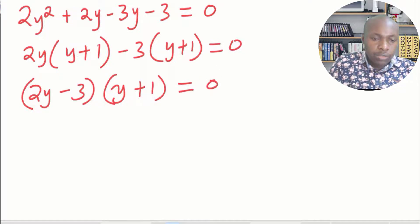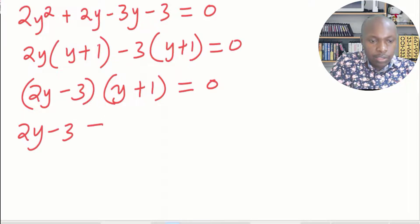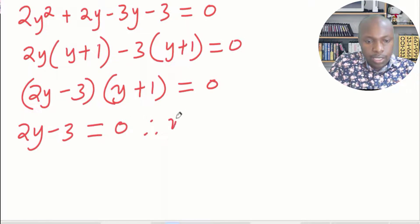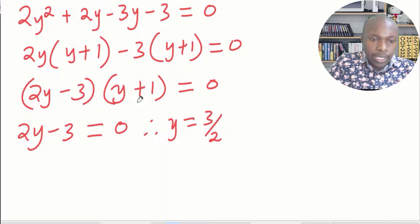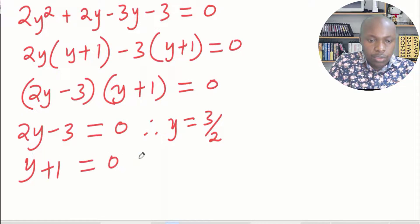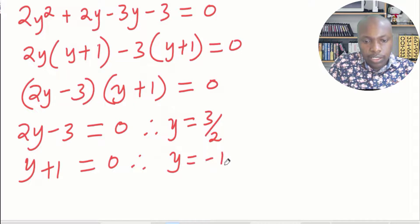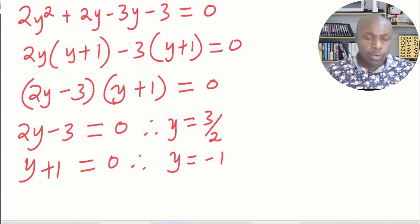So we have two solutions. Either 2y minus 3 equals 0, which gives y equals 3 over 2, or y plus 1 equals 0, which gives y equals negative 1. So now we have two values of y.